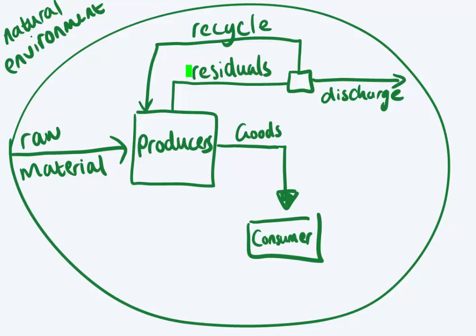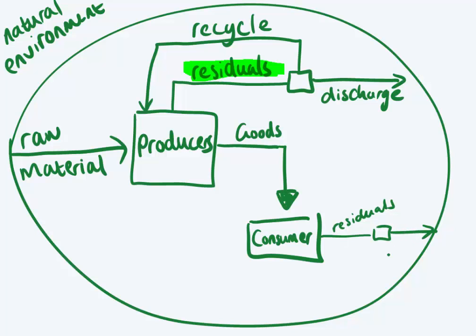There's a certain amount of residuals in production. The consumer also generates residuals. After we've used the glass — let's say it breaks in a couple of years — then we can discard it, because there are again residuals. Now, residuals we can either discard into the environment as waste, or, same as in production, we can recycle it. If you recycle old glass jars, for example, then it goes back to the producer and they use it again.